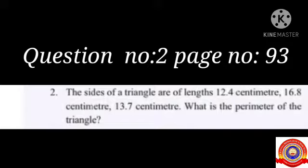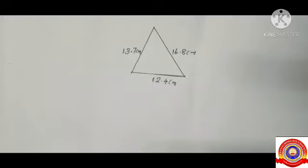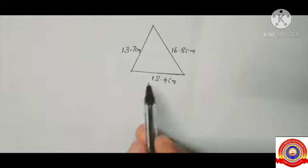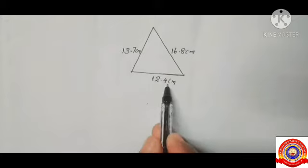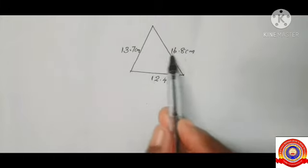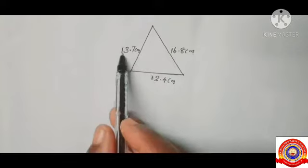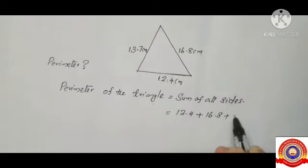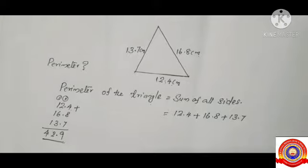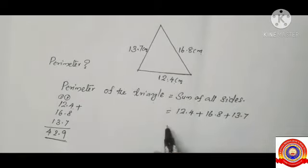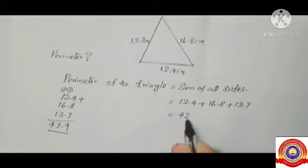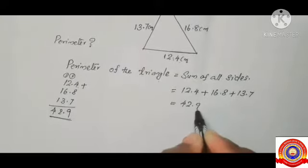Next problem: a triangle has sides 12.4 cm, 16.8 cm, and 13.7 cm. What is the perimeter of the triangle? We know that the perimeter of a triangle is the sum of all its sides: 12.4 plus 16.8 plus 13.7 equals 42.9 centimeters. So the perimeter of the triangle is 42.9 centimeters.